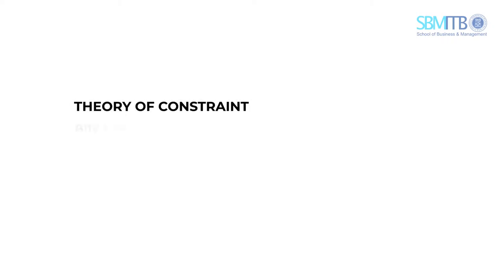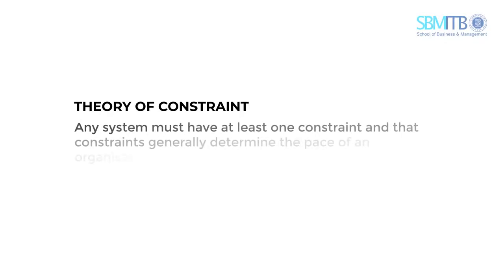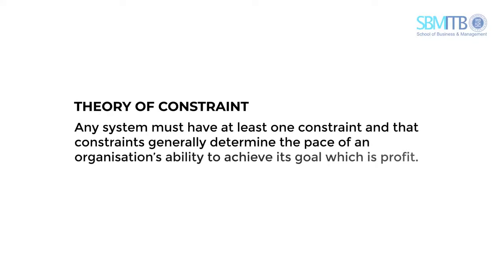The Theory of Constraint is a philosophy that suggests that any system must have at least one constraint, otherwise it would generate an infinite amount of output. That constraint generally determines the pace of a company's ability to achieve its goal, which is profit. There is rarely an equal flow of work within each work center in a process.